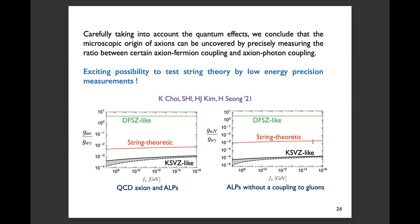By carefully examining the quantum effects — the renormalization group running — for each class of axion, we conclude that the microscopic origin of axions can be uncovered by precisely measuring the ratio between certain axion-fermion couplings and the axion-photon coupling. The ratio between axion-electron coupling and axion-photon coupling is clearly different for the three classes of UV physics. For axion-like particles without gluon coupling, the ratio of axion-nucleon to axion-photon coupling can also serve as a discriminator. This opens the exciting possibility of testing string theory by low-energy precision measurements, providing important motivation for the community to develop better precision for measuring axion-fermion and axion-photon couplings, although it is very challenging.